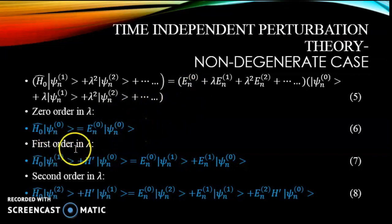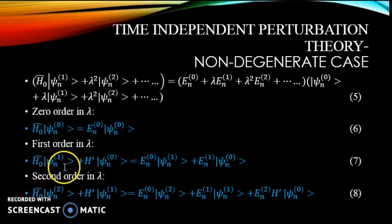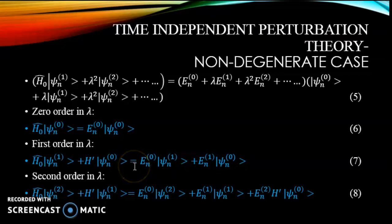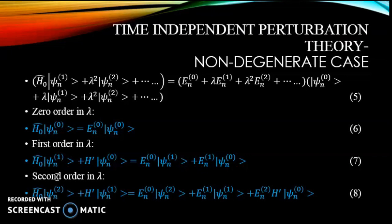For the first-order term in lambda, equating coefficients of lambda on both sides, from the left-hand side we have H0 psi_n1 + H' psi_n0, and from the right-hand side we have E_n0 psi_n1 + E_n1 psi_n0.